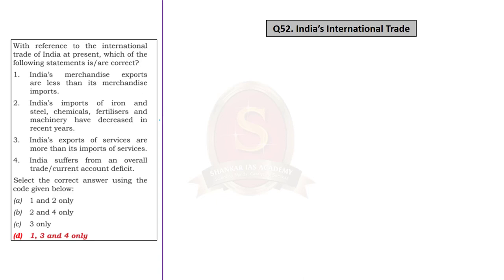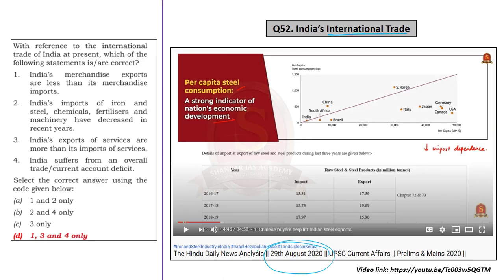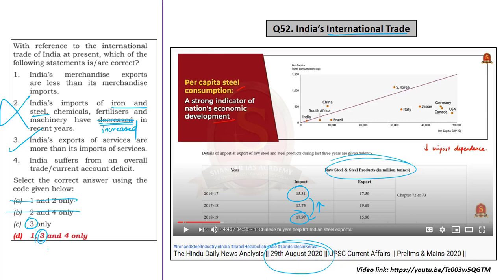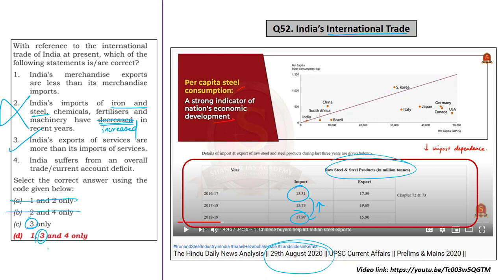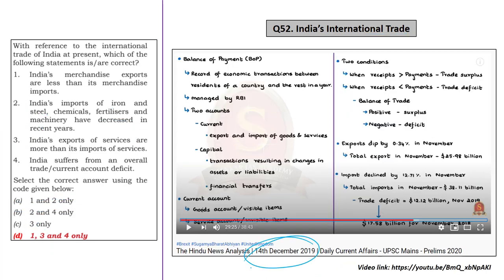The 50th question is about international trade of India. On 29th August 2020 in the News Analysis, we discussed India's steel exports and imports — we saw that India's imports of raw steel and steel products had increased in recent years. But Statement 2 in the question says India's imports of iron and steel have decreased in recent years — so that statement is incorrect. If you know Statement 2 is incorrect, you can eliminate options A and B. From the remaining options, Statement 3 is correct: India's exports of services are more than its imports of services. On 14th December 2019, we discussed that India has an overall deficit in trade — making Statement 4 correct. When we know Statement 4 is correct, we can easily arrive at the correct answer, Option D.